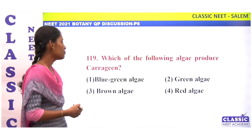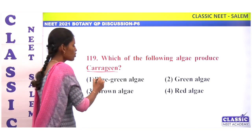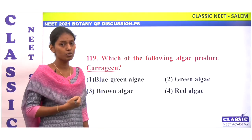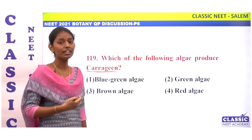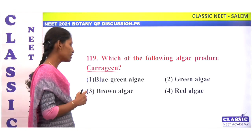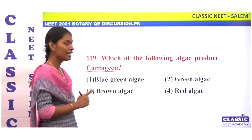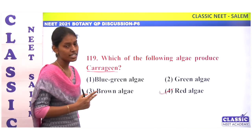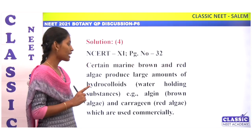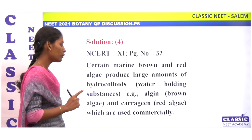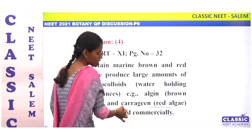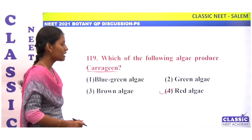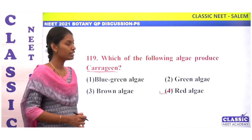Which of the following algae produces carrageenan? Carrageenan is a hydrocolloid — a water holding substance. It is produced by red algae. So the correct answer is option 4: red algae.